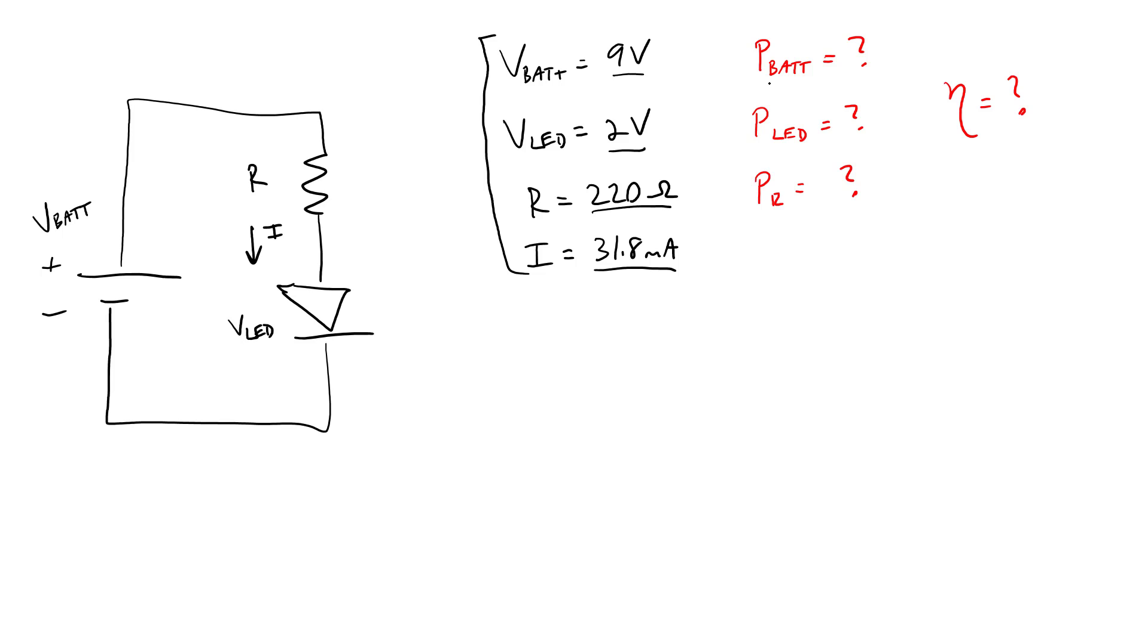What we're interested in now is given all of these values, what is the total power supplied to the circuit by the battery? How much of that power is actually delivered to the LED? How much of it is dissipated in the resistor? And then what is the overall efficiency of the circuit?